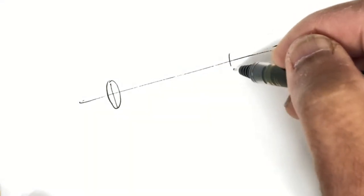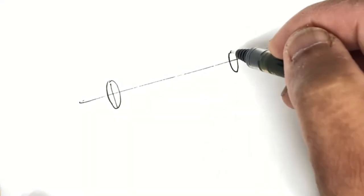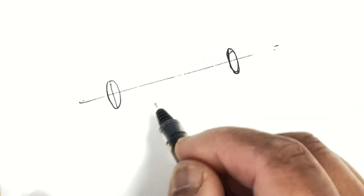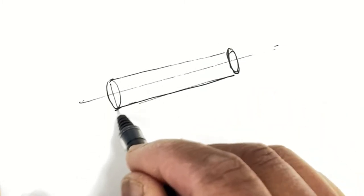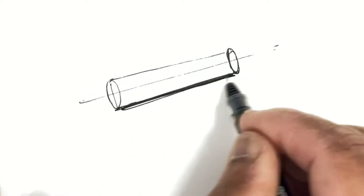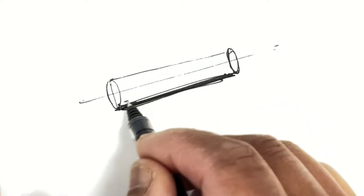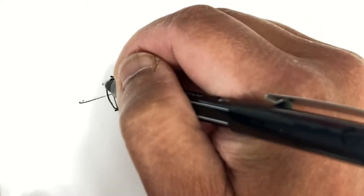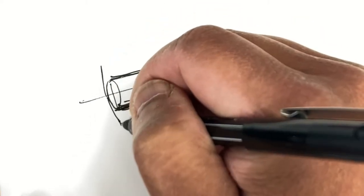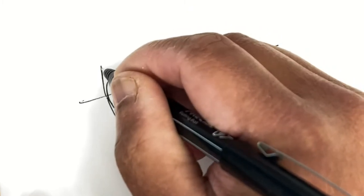I go ahead and connect them using a very slight one-point perspective, so there will be a little bit of a taper between the two ovals. I'll roughen the parts of the syringe.